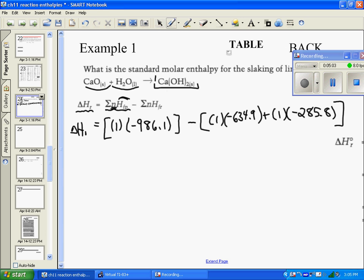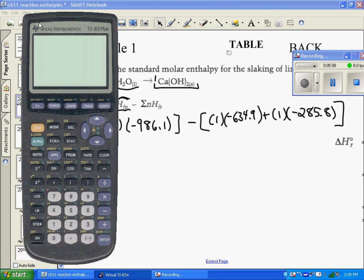That's why it's delta HR for the reaction. I'll bring up the calculator and we'll see how lined up we are. We have negative 986.1, and we subtract—I'll put the other two in brackets—negative 634.9 and negative 285.8.